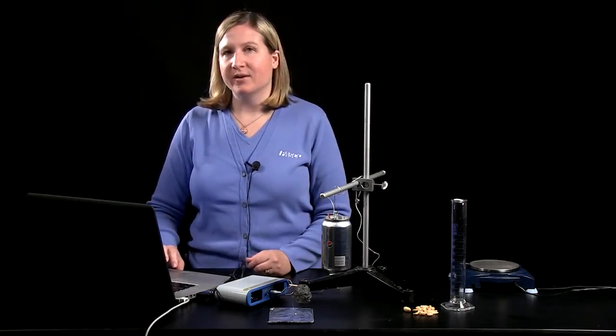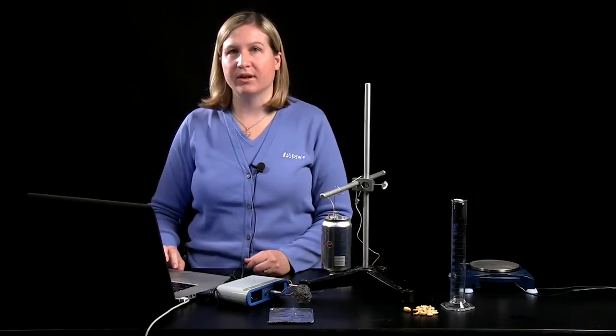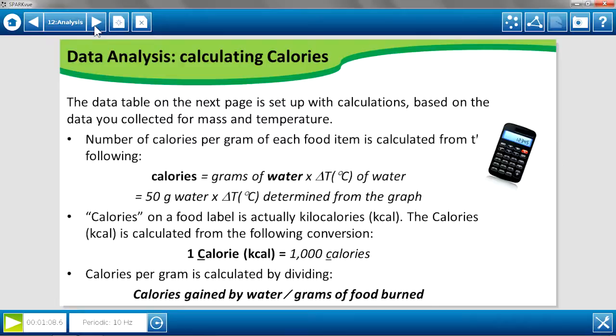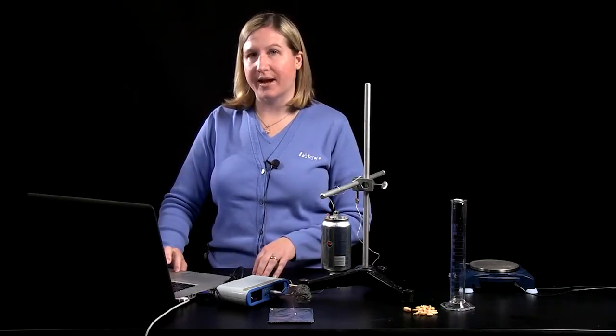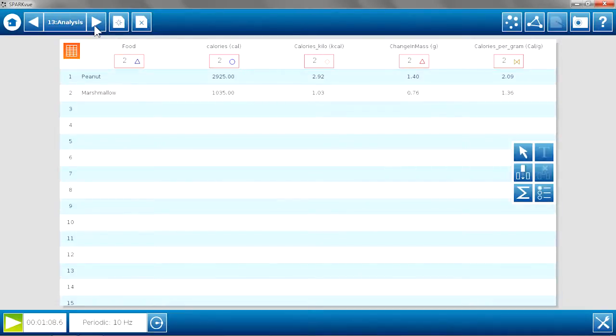But if students are then going to compare their results to a nutrition label, they actually need to do a conversion of calories to kilocalories. On a nutrition label, this is very subtle. It's just represented as a capital C versus lowercase c. So they'll need to divide by a thousand to do that conversion. And then finally, again, for a fair comparison, we need calories per gram. So we'll take our calorie calculation and divide it by the grams burned. And that will allow us to get that fair comparison of the two foods.